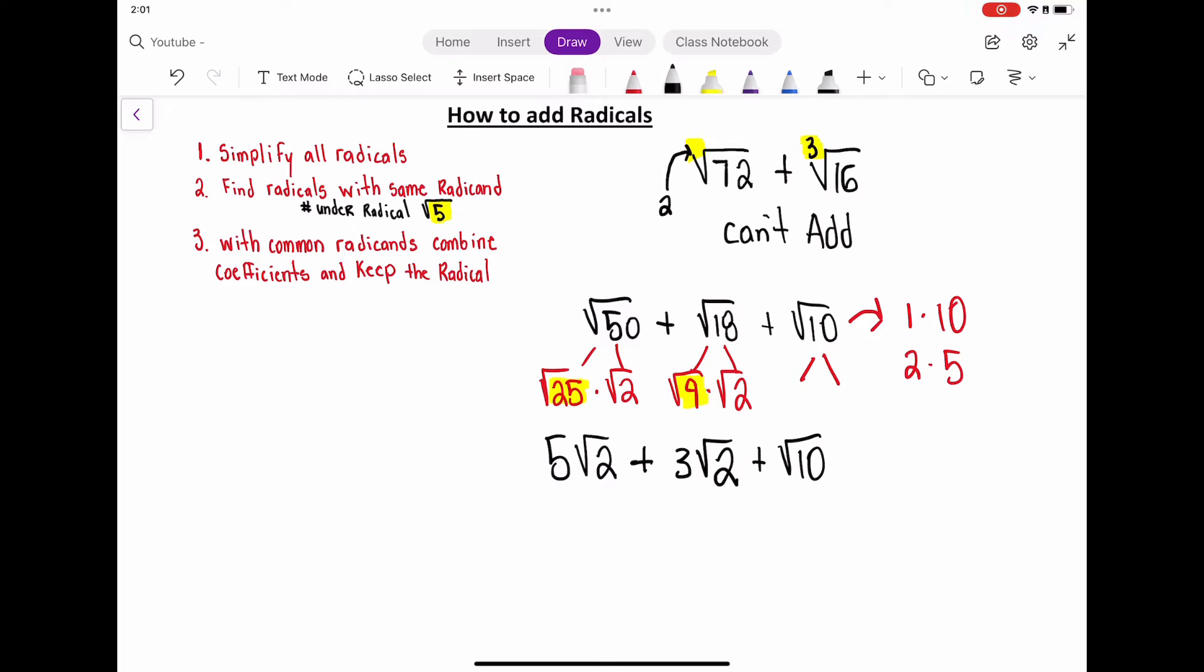And now at this step, we simplified all our radicals. Now we need to find radicals with the same radicand. And all that's saying is we have to make sure that they have the same number under the radical symbol. Once they do, we could add them by just adding the coefficients and keeping the radical the same.